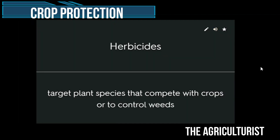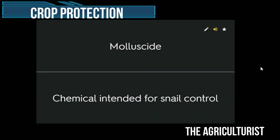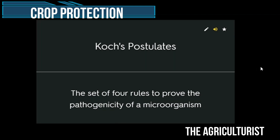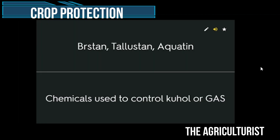Herbicides — target plant species that compete with crops to control weeds. Molluscicide — chemical intended for snail control. Contact herbicides — Paraquat is an example. Koch's postulates — the set of four rules to prove the pathogenicity of a microorganism. Brestan, Bayluscide, Aquatin — chemicals used to control GAS.